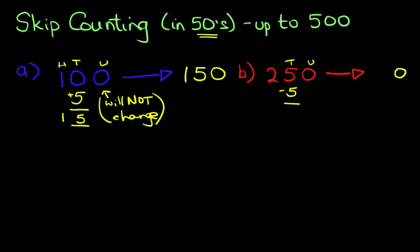5 plus 5, and you know this, 5 plus 5, that gives us 10, 1 carried over. The hundreds, 2 plus 1 is 3. So therefore, the answer is 300. The number after 250, if we are counting in 50s, is 300. It's very simple.